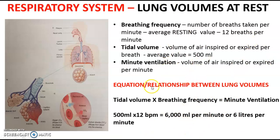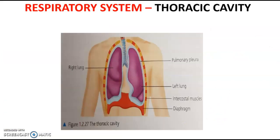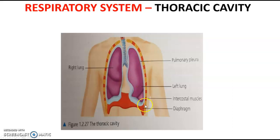Now we're going to have a look at the mechanics that allow us to get air in and out. Before that, just have a quick look at the thoracic cavity. The thoracic cavity is basically where everything happens that we're interested in for this specification for the respiratory system. It's a chamber of the body that is protected by the ribs. You can see here the external and internal intercostal muscles, which are attached to the ribs and act as a kind of wall around the thoracic cavity. Inside, we've got the lungs and the diaphragm, which is a key respiratory muscle. We'll look at changes to the thoracic cavity as we go through the mechanics of breathing.